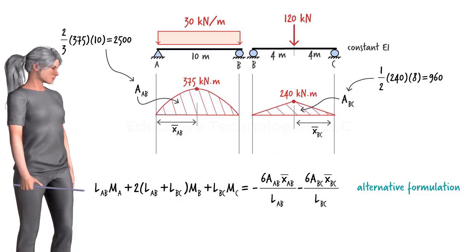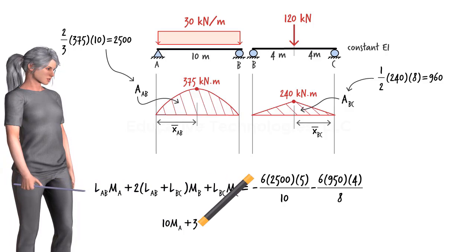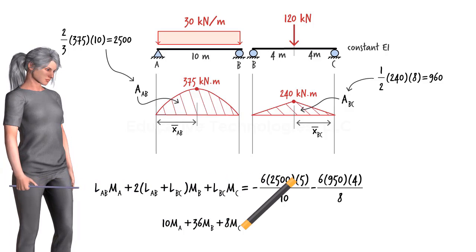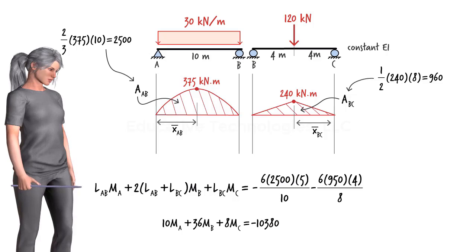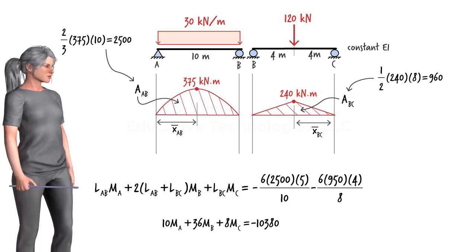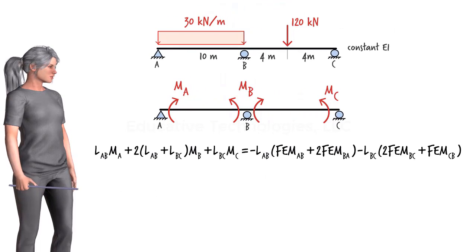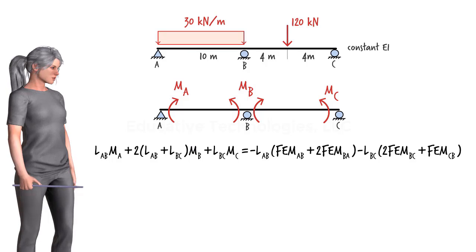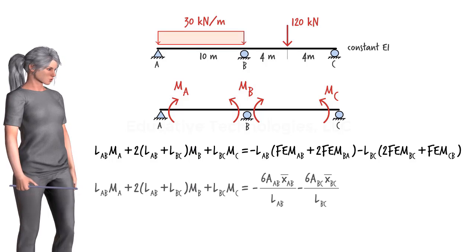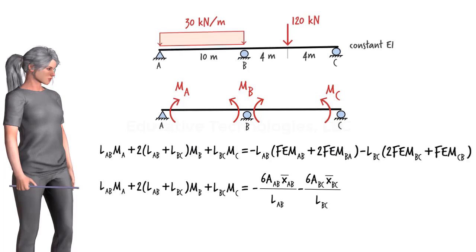Therefore, the right side of the three-moment equation can be written accordingly, and the entire equation simplifies to the same result obtained previously using the fixed-end moment formulation. So both formulations give us the same three-moment equation. This beam can be analyzed using either equation, and the general forms of the two equations are shown.